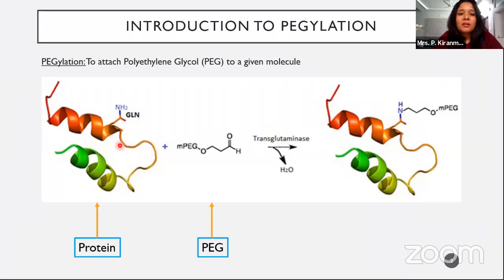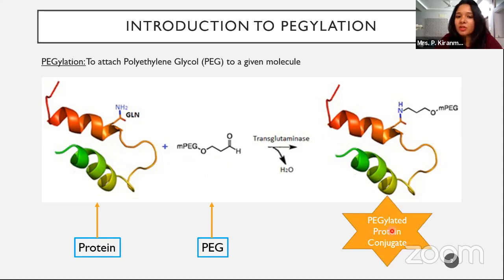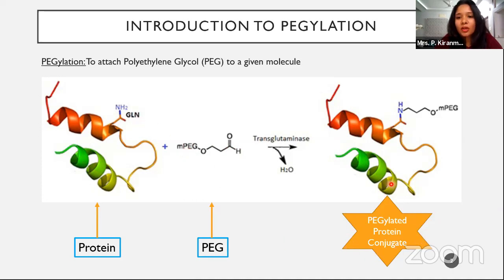Here I'd like to explain with an example. We have a protein molecule — or any drug — and a PEG molecule, which is polyethylene glycol. When these two molecules are combined, we get a PEG conjugate, called a PEGylated protein conjugate, because we are attaching the PEG molecule to the protein molecule. In this example, with the help of transglutaminase, glutamine is removed and the MPEG epoxide is attached, producing a protein conjugate.